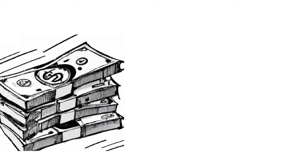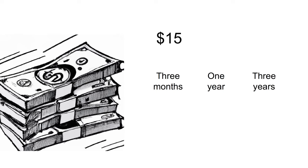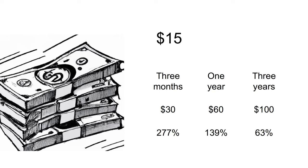Similar evidence comes from Thaler. He estimated the discount rate of experimental subjects by presenting them with a choice between a prize today or a larger prize later. In each case, the subjects were asked: given the size of the prize that could be received today, how large would the future prize need to be such that waiting would be as attractive as receiving the money now. For example, some subjects were asked how large a future prize would need to be such that they would be happy to wait three months, one year, or three years rather than receiving $15 today. The median answers were $30, $60, and $100 respectively. If you use these answers to calculate an implied discount rate, the result is 277%, 139%, and 63%. It can be seen that this discount rate is decreasing with the length of delay, which matches the pattern of increasing discount factor with the length of delay.